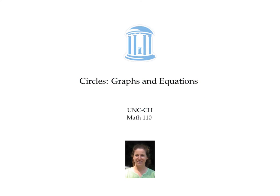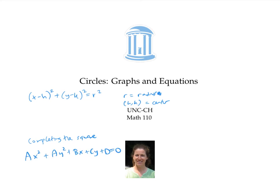In this video, we found the standard equation for a circle — x minus h squared plus y minus k squared equals r squared — where r is the radius and h, k is the center. We also showed a method of completing the square: when you have an equation for a circle in disguise, completing the square will help you rewrite it into standard form.